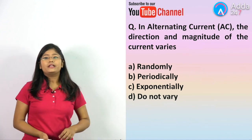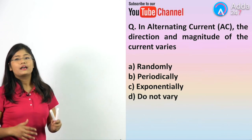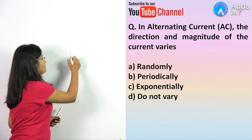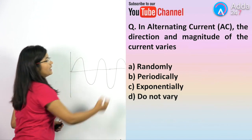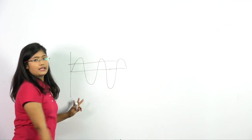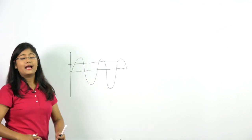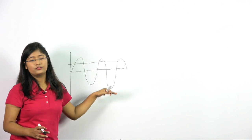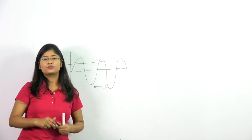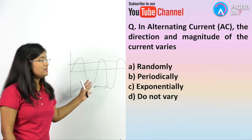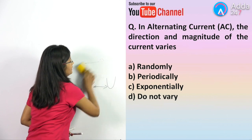The next question is about alternating current. In AC current, the direction and magnitude of the current varies. As you can see from the AC diagram, if it were direct current the graph would be flat, but because this is alternating current, both direction and magnitude vary periodically within each cycle. So the answer to this question is option number B.